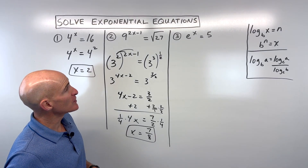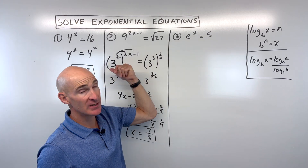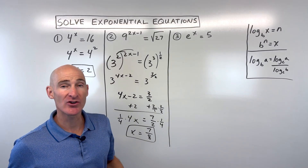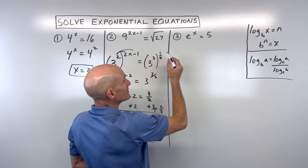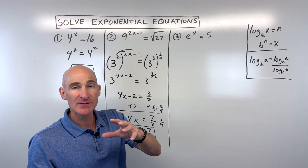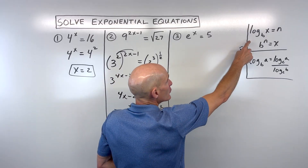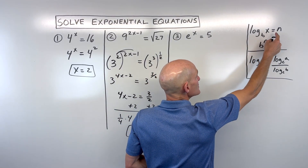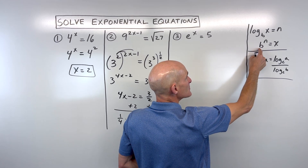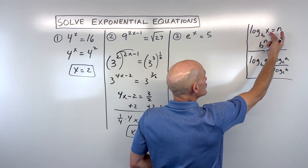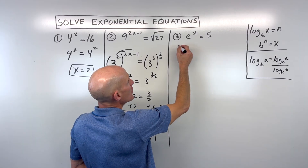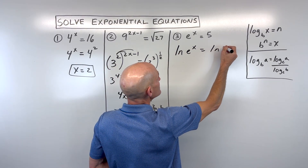Let's take a look at number 3. This one's different because we can't get the bases to be the same. So how do we get that variable down from the exponent position to solve for x? Well, this is our natural base e — Euler's number, about 2.7. You want to be able to switch between exponential and logarithmic form. Log base b of x equals n, and in exponential form, b to the n equals x. Since this is base e, we can take the natural log of both sides.